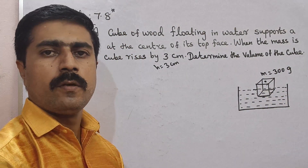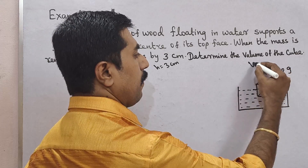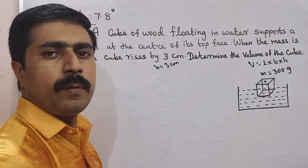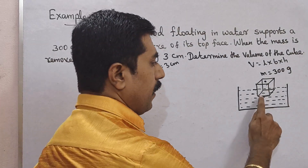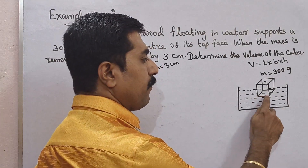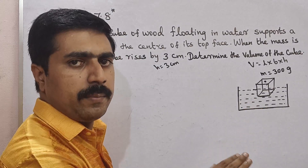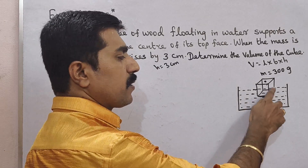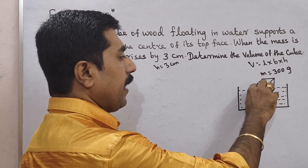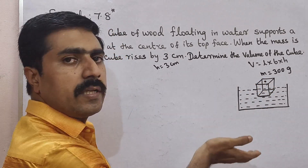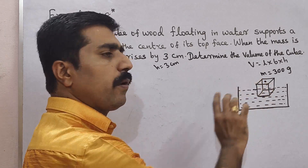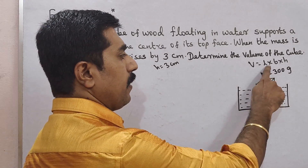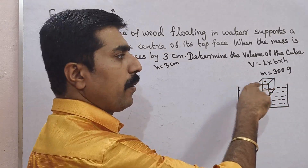Volume is equal to length times breadth times height. The length and breadth are the full sides of the cube, and the height in question is the 3 cm rise.